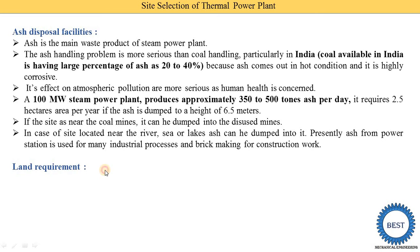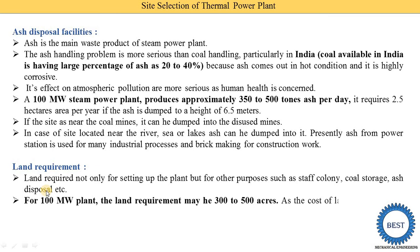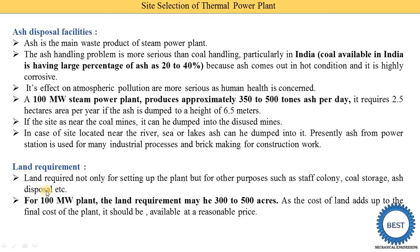Next point is the land requirement. Land is required not only for setting up the plant but for other purposes such as staff colony, coal storage, and ash disposal. For coal storage and ash disposal, very large space is required compared to the plant setup itself. For a 100 megawatt plant, the land requirement may be 300 to 500 acres. The cost of land adds to the final cost of the plant, so land shall be available at a reasonable price. Land should also be available for future extension.